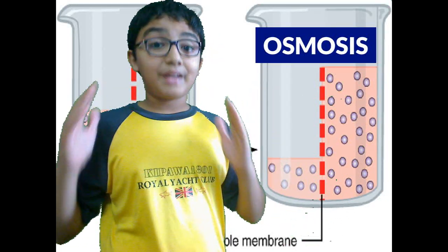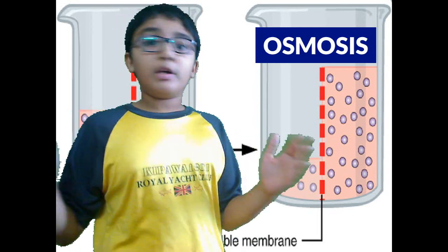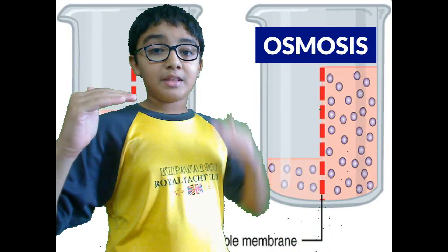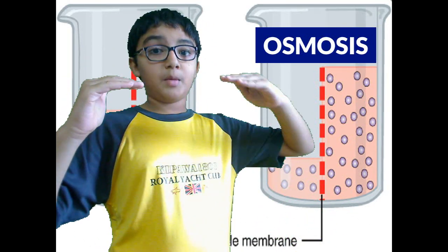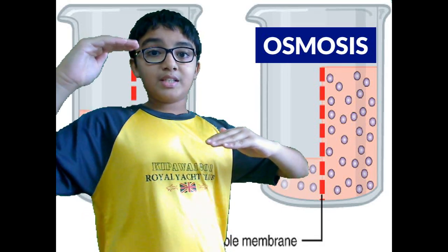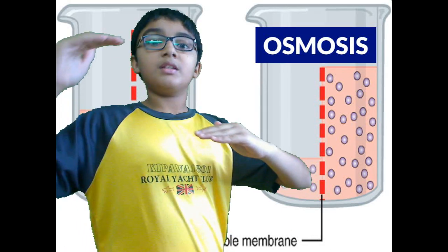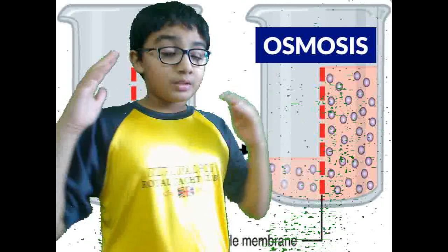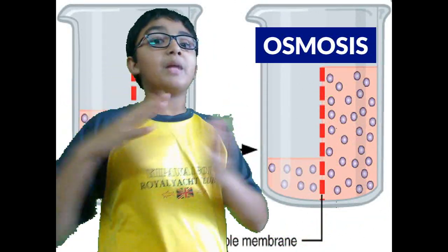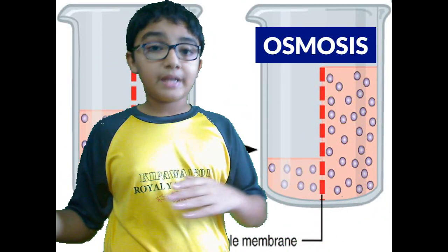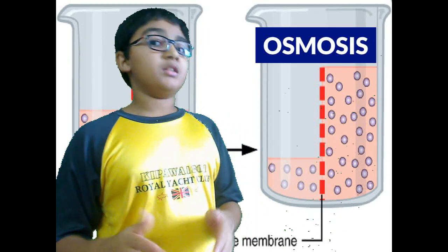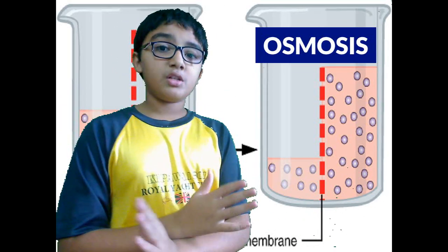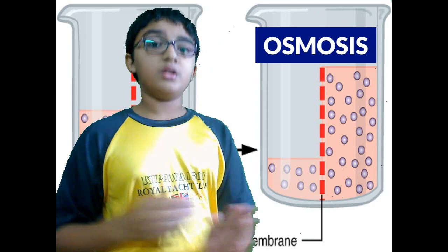You wait for one or two hours and when you come back, you will see that the water on the filled side has leveled down and the water on the empty side has come up. The water seeped through the cloth and made the levels equal. Water from the higher concentration on the left side moved to the right side because of osmosis.